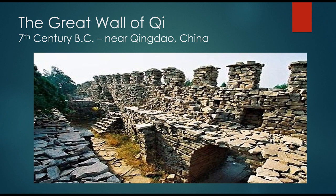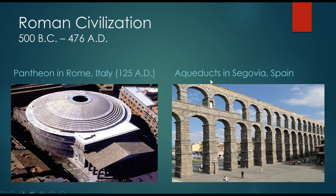All the way up to the 7th century BC, the Chinese civilization started using forms of concrete-type structures, even in the Great Wall of China near Qingdao.